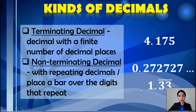Take a look at the two examples here. In the first, as we can see, 2 and 7 are both repeating. Next, we have 1.33 with a bar at the top, which shows that 3 and 3 are both repeating.